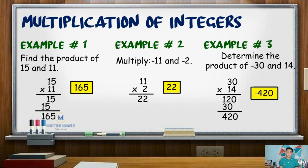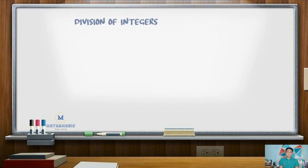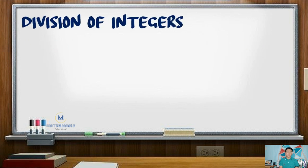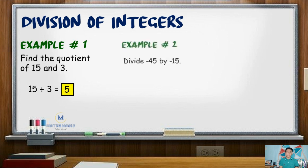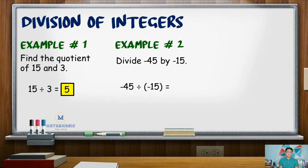Also, for division of integers: positive 15 divided by positive 3 has a quotient of positive 5. Negative 45 divided by negative 15 — 45 divided by 15 is 3. Since both are negative and like signed, the quotient is positive.